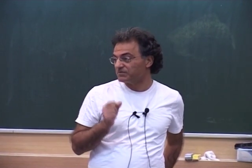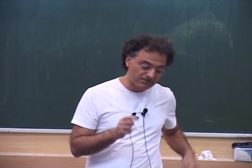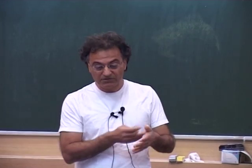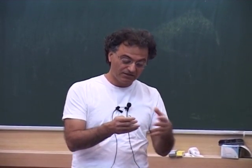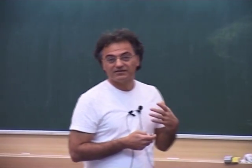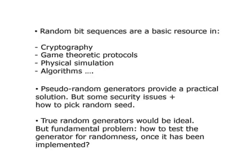True random number generators suffer from various problems, including just finding good sources of randomness that you can exploit repeatedly over time. Underlying it all, there's this philosophical question: even if you built the perfect random number generator, how do you test whether it's good? So really, this talk is focused on the philosophical question — can we, or can we not, test randomness — not on the practical versions.